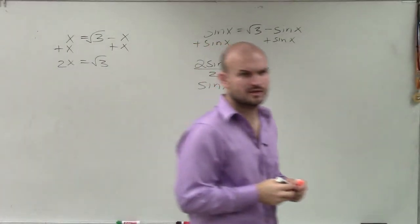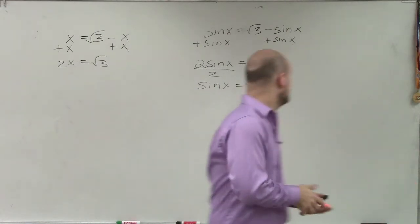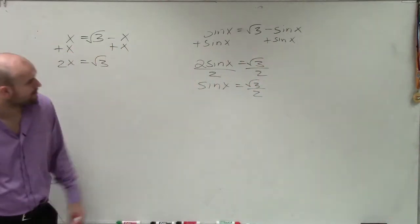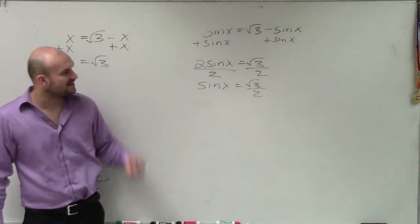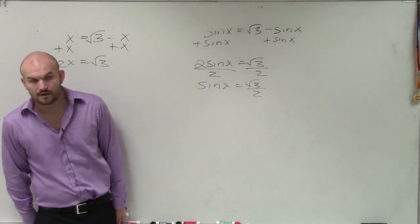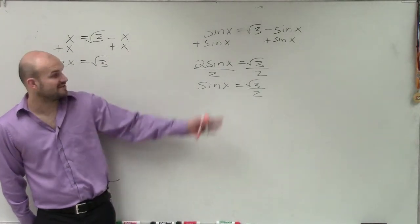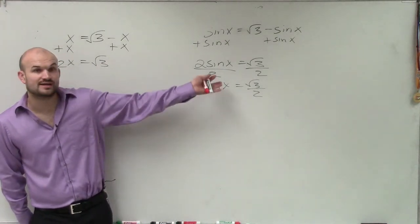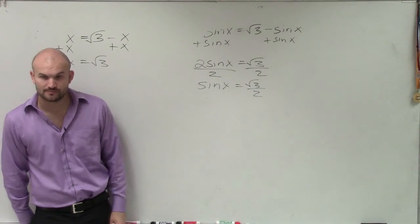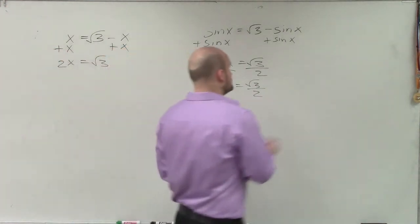So now we have sine of x equals the square root of 3 over 2. What we need to do is find the values for x when sine equals the square root of 3 over 2. So again, we go back to our lovely unit circle.